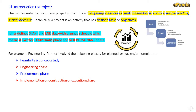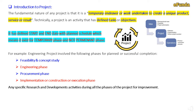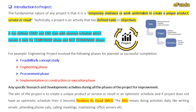A project exists for a temporary phase and not a permanent phase. For example, considering an engineering project, it involves the following phases for a planned or successful completion: feasibility and concept study, engineering phase, procurement phase, implementation or construction or execution phase, and any specific research and development activities during all the phases for improvement. The aim of a project is to create a unique product, service, or result with an optimistic schedule. If a project does not have an optimistic schedule, it becomes business as usual — meaning daily activities like writing emails, attending phone calls, calling meetings, and maintaining office servers.